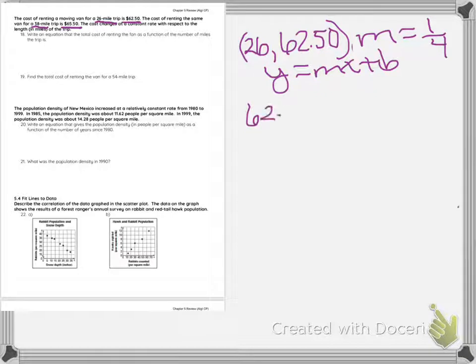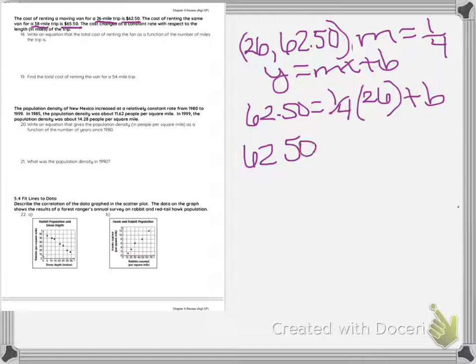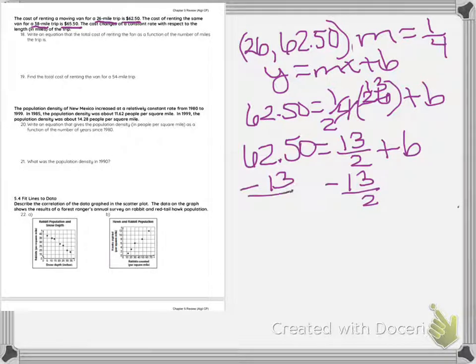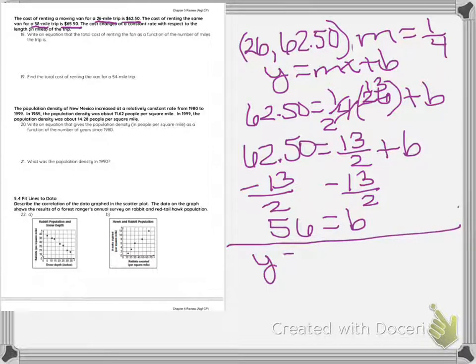So my Y is 62.50 equals 1/4 times 26 plus B. So I'm going to get 62.50 equals 13/2 plus B, and I'm going to create my new line of Y equals 1/4 X plus 56. So that is my equation.